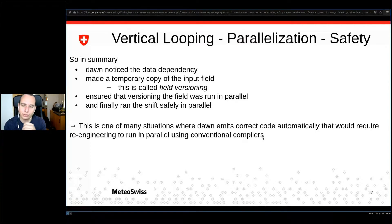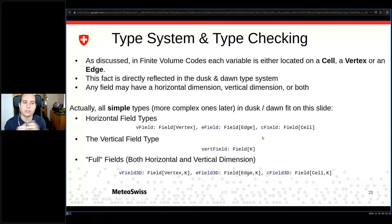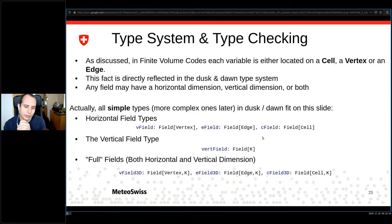This is just one situation where Dawn is not only a productivity and performance tool but also a safety tool. Speaking of safety, there are two kinds: runtime safety, where we just saw an example, and safety you can enforce at compile time before code is even run. Type checking and type safety are about the latter — safety you can imply before running the code. Dawn is strictly typed.